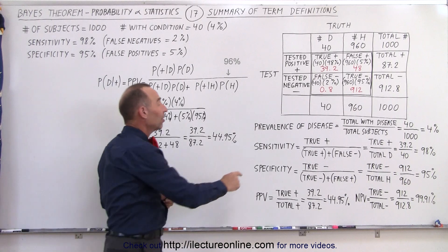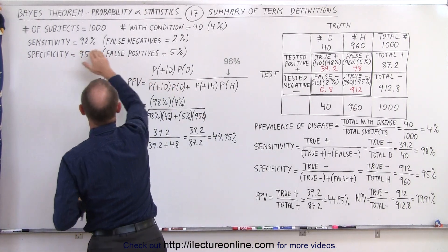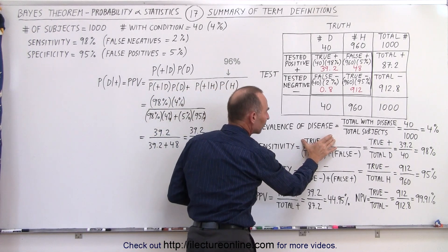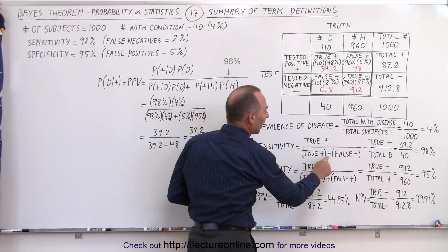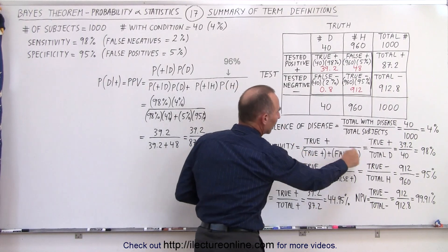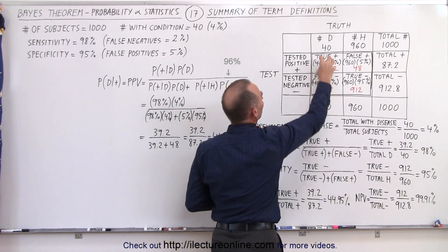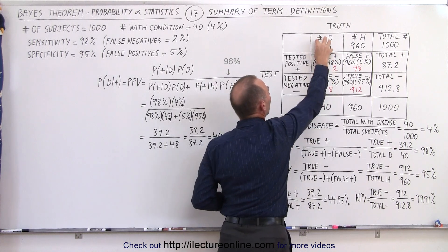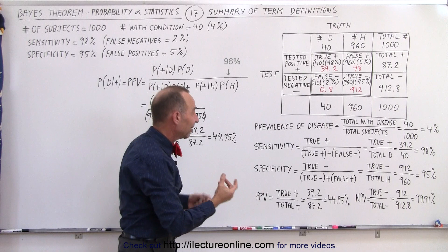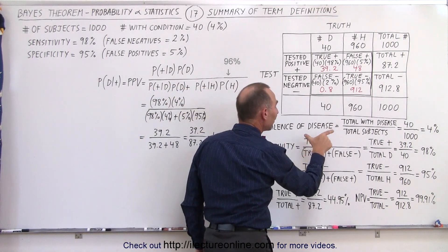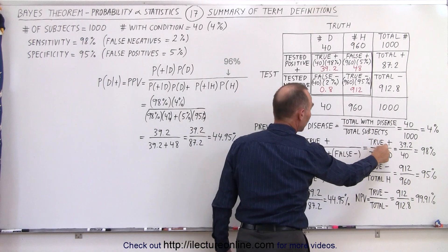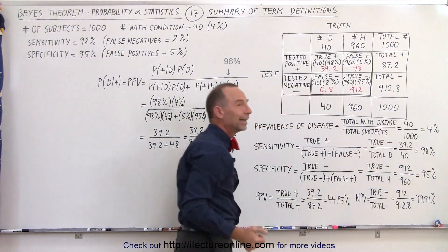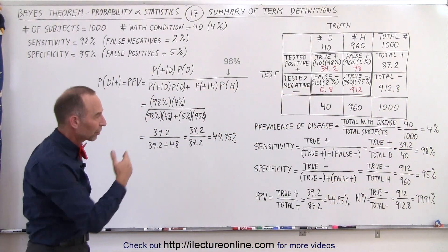The second term is sensitivity. It is strictly defined as the ratio of true positives divided by true positives plus false negatives. The denominator represents the total number with the condition. So sensitivity is true positives divided by the total that have the condition. The number of true positives is 39.2, the total with the condition is 40, and that ratio — 98% — is the sensitivity.